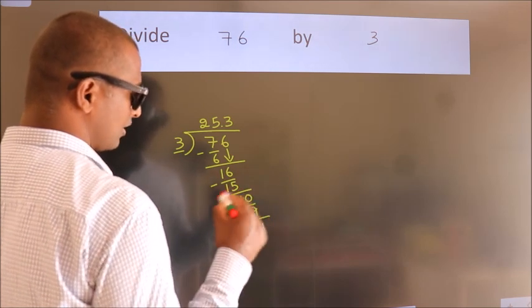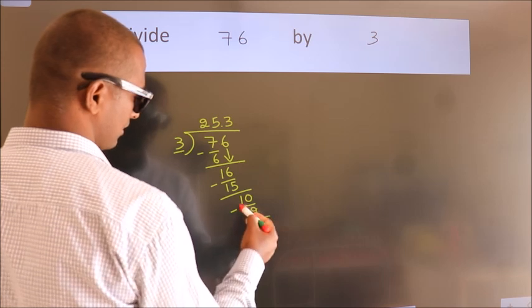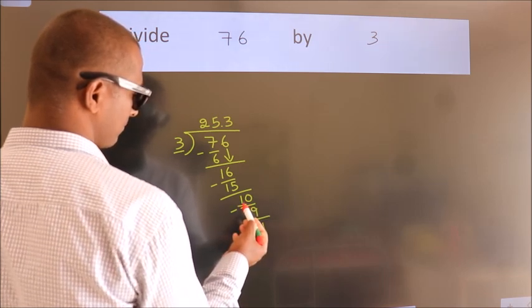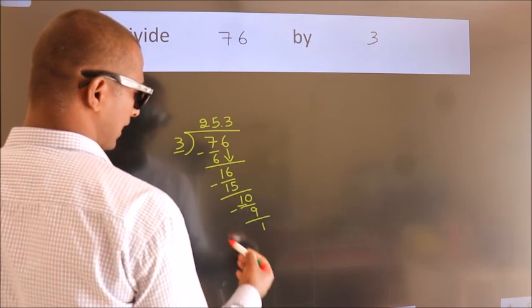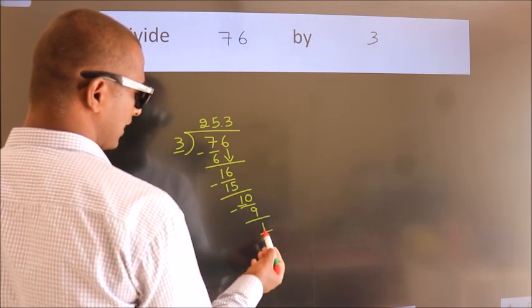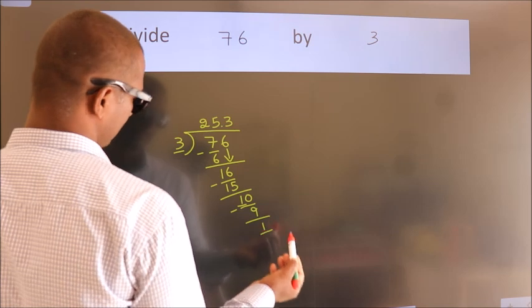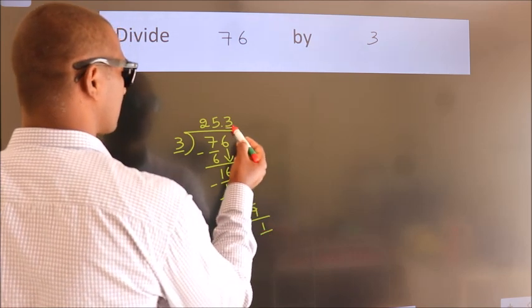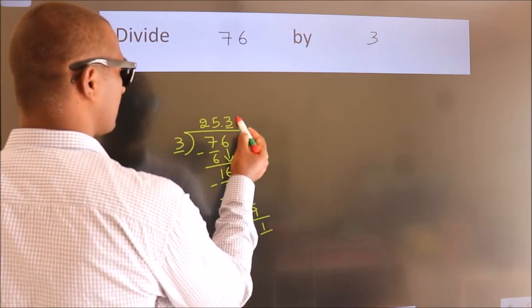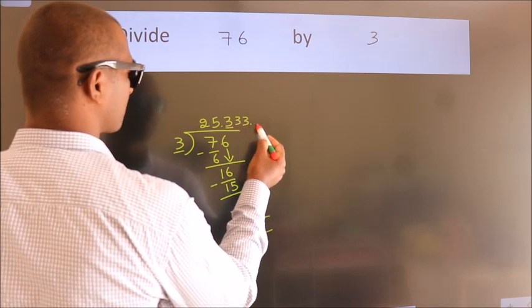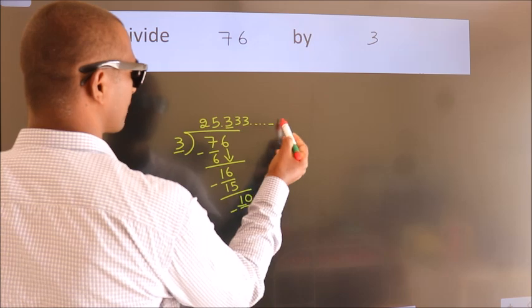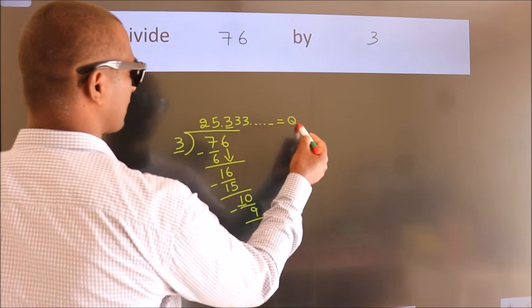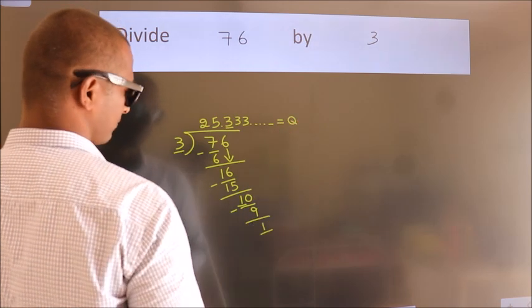Now, you observe. We had 1 here, and we got 1 again. That means this number keeps on repeating. So this is our quotient.